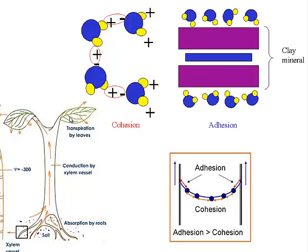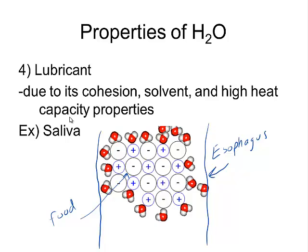The last property is that it's a good lubricant, which means due to its ability to be cohesive and dissolve and have a high heat capacity, it's able to surround things like food molecules and make it so these food molecules, in this case would be salt, doesn't rub along your esophagus and become uncomfortable. What it does is it creates this almost protective barrier around that food substance.